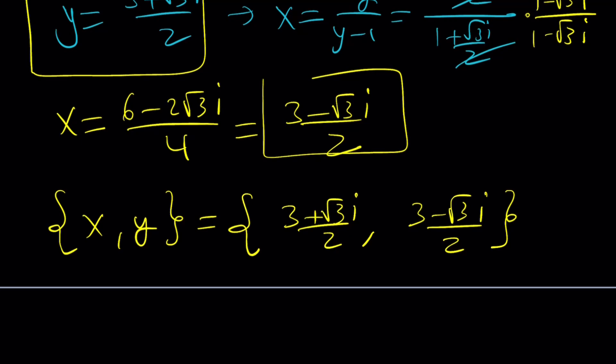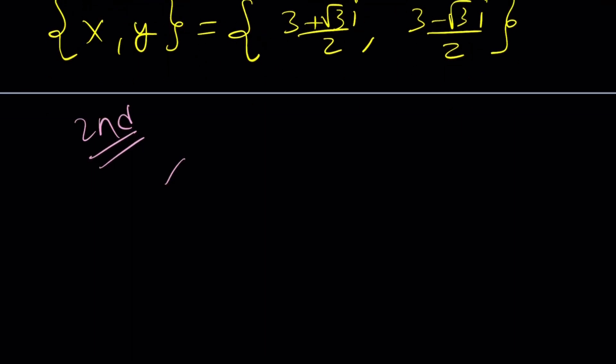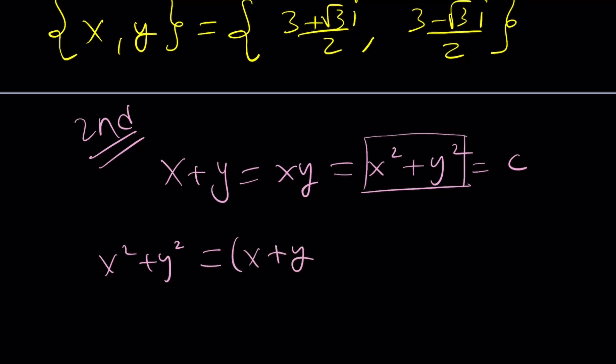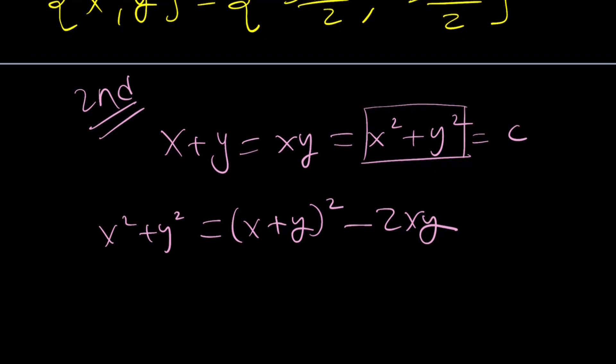But before we get to the end of this video, maybe we can talk about an alternative method. Let's call that second method. So how does the second method work? Let's go ahead and rewrite this. And then from here, we can hopefully get something like this. I can set all of these equal to c. But then I have something else that I can use for this. x squared plus y squared is x plus y squared minus 2xy. As you know, there's a term in the middle that needs to cancel out. But we just set x plus y equal to c.